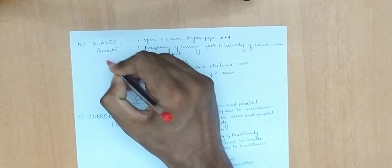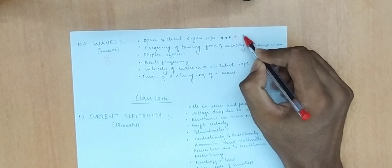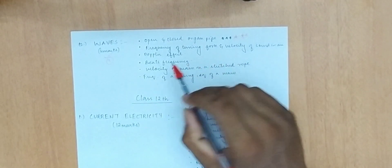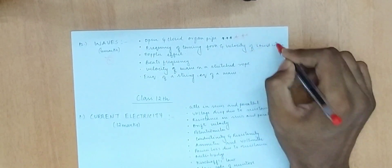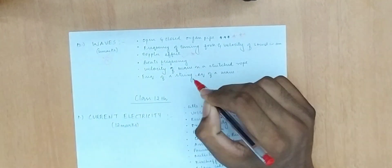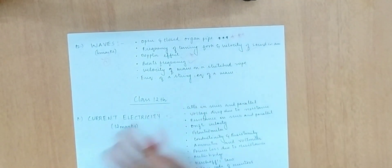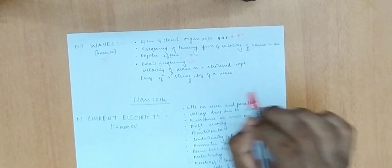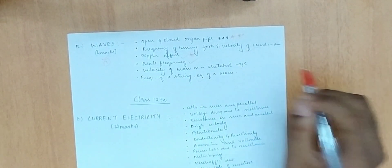Waves is one of the most important topics. Key areas include open and closed organ pipes, frequency of tuning fork, velocity of sound, Doppler effect, beats frequency, velocity of a wave on a stretched string, and frequency of string and equation of wave.